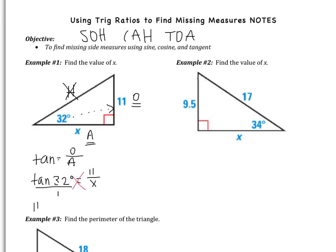1 multiplied by 11 is just 11. x multiplied by tangent of 32, just keep it like that. Now to get x, I divide by the tangent of 32. So I get x equals 11 divided by the tangent of 32 degrees. And now we need to go to the calculator.